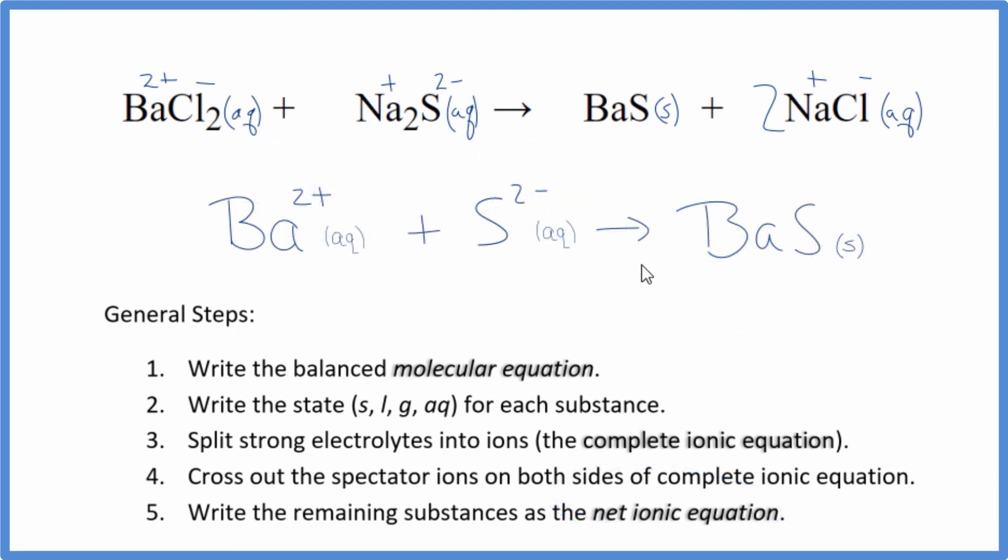So this is the balanced net ionic equation for barium chloride plus sodium sulfide. You'll note charge is balanced. We have a 2 plus and a 2 minus. That adds up to a net charge of 0. This is a neutral compound, net charge of 0. And the atoms, they're balanced as well. This is Dr. B with the balanced net ionic equation for BaCl2 plus Na2S. Thanks for watching.